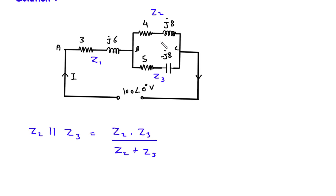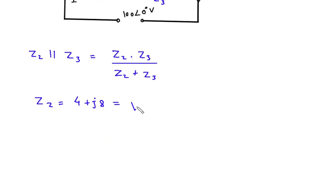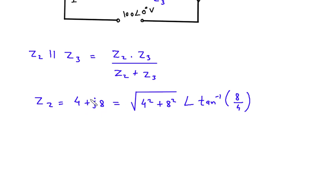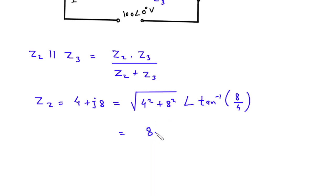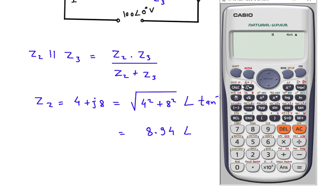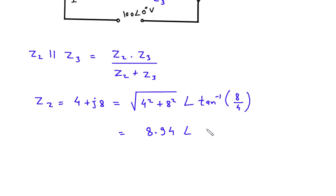Now Z2 is equal to 4 plus J8. Since this is a rectangular form, we have to convert it into its equivalent polar form. Its equivalent polar form will be under root of 4 squared plus 8 squared, which is 8.94, at an angle of tan inverse of 8 by 4, which is 63.43 degrees. This is the value of Z2 in polar form.